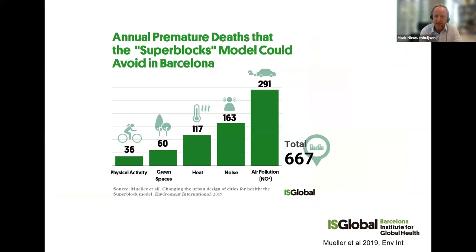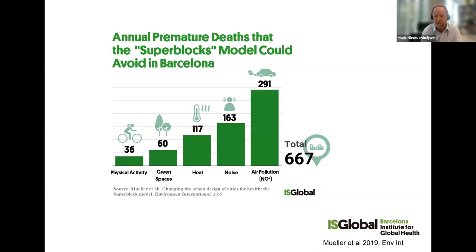We did a health impact assessment and estimated that in the city we could prevent almost 700 premature deaths if we would implement all 500 superblocks. Most of the benefits come from reduction in air pollution through NO2 reductions, followed by reduction in noise, extreme heat, and introduction of more green space. There are also some benefits for the increase in physical activity, although this is probably underestimated because we didn't have estimates on how superblocks actually change physical activity. By changing your urban design through remodeling, you can prevent quite a bit of the mortality burden.